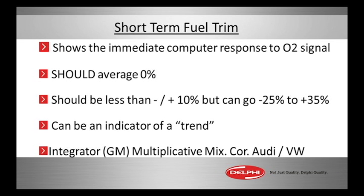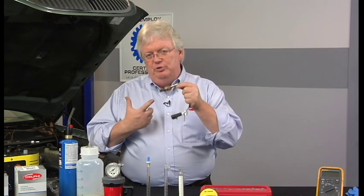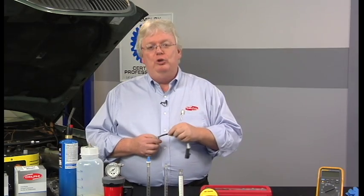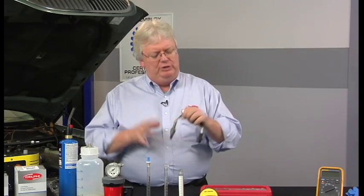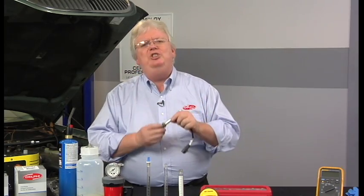Short-term fuel trim — what is it? It is the knee-jerk reaction of the computer seeing the O2 sensor change. As it sees a trend towards rich or lean, it's going to make corrections almost immediately when we see low or high O2 voltages. We'll talk a little bit about the wideband, but mostly switching air fuel or switching O2 sensors.